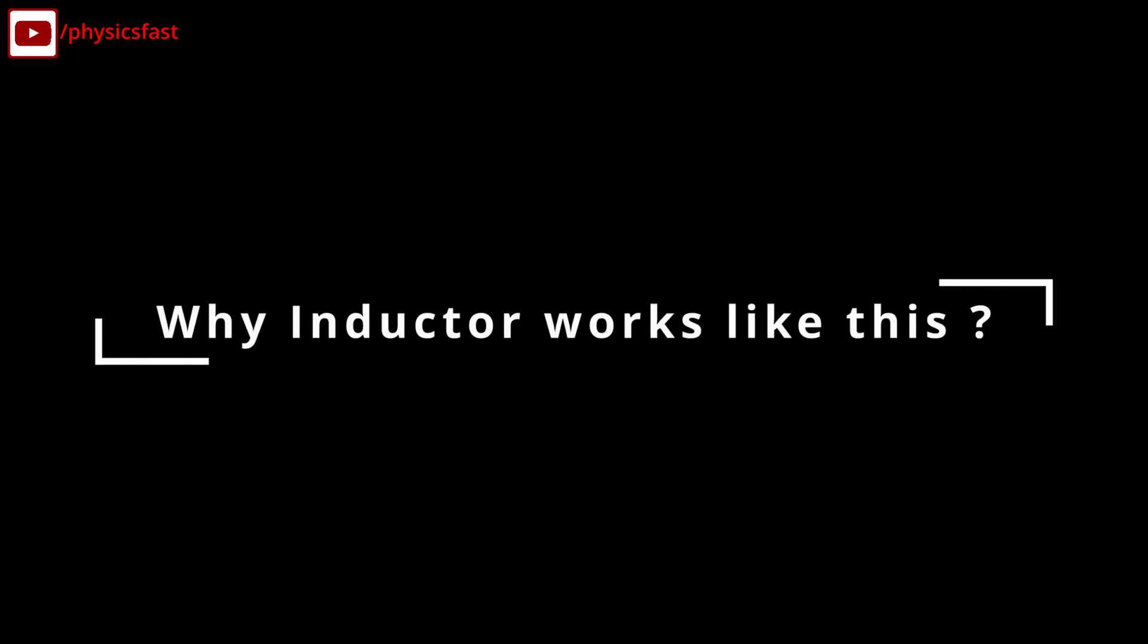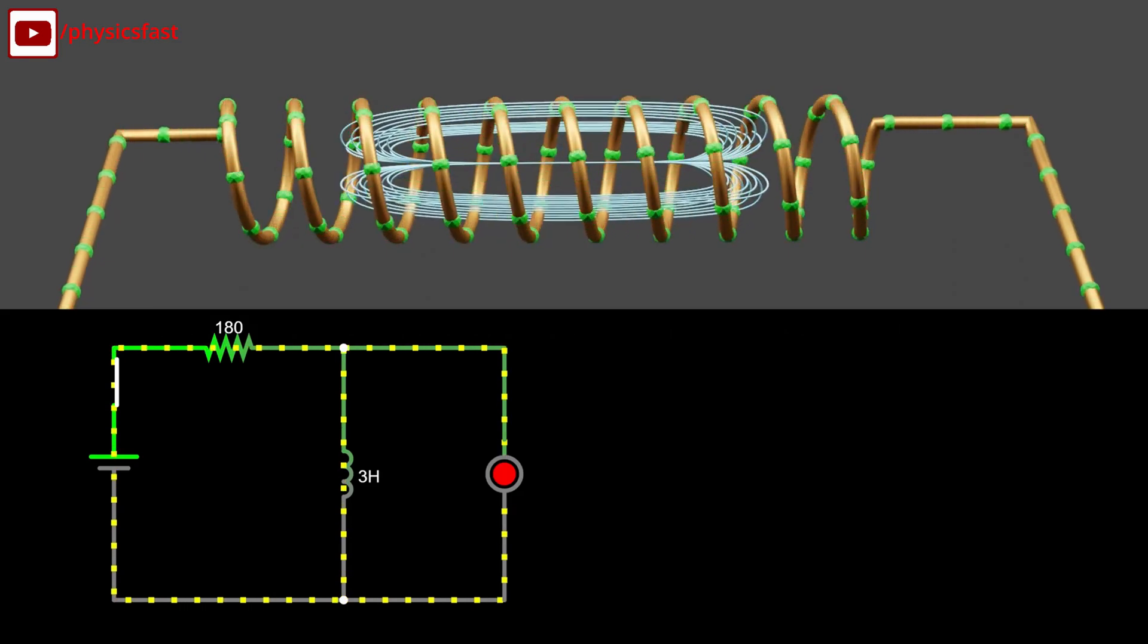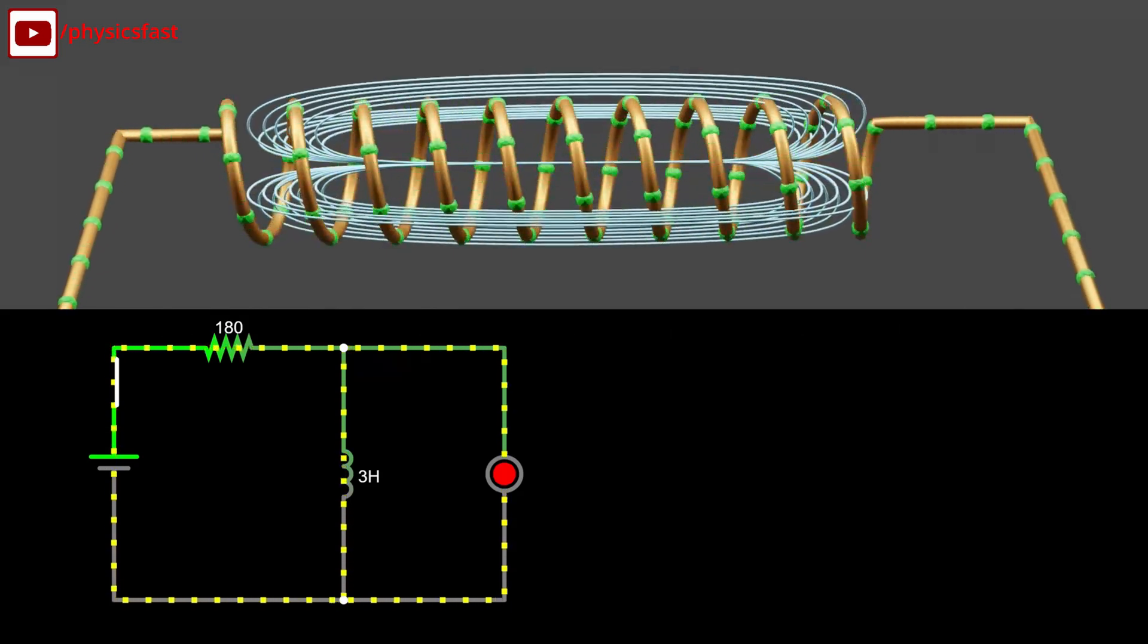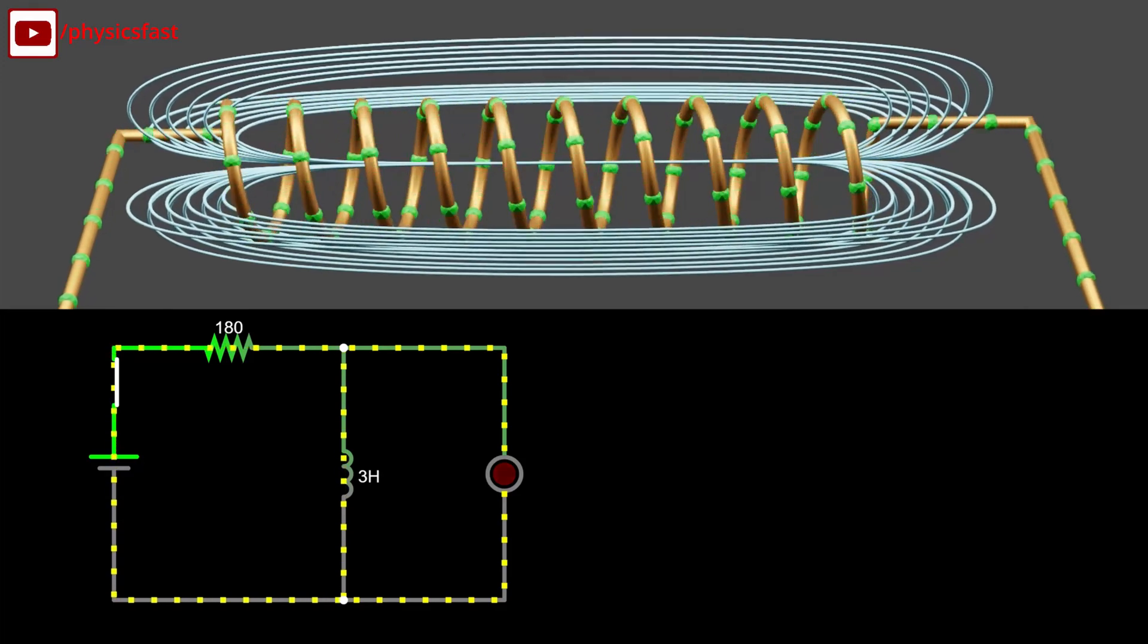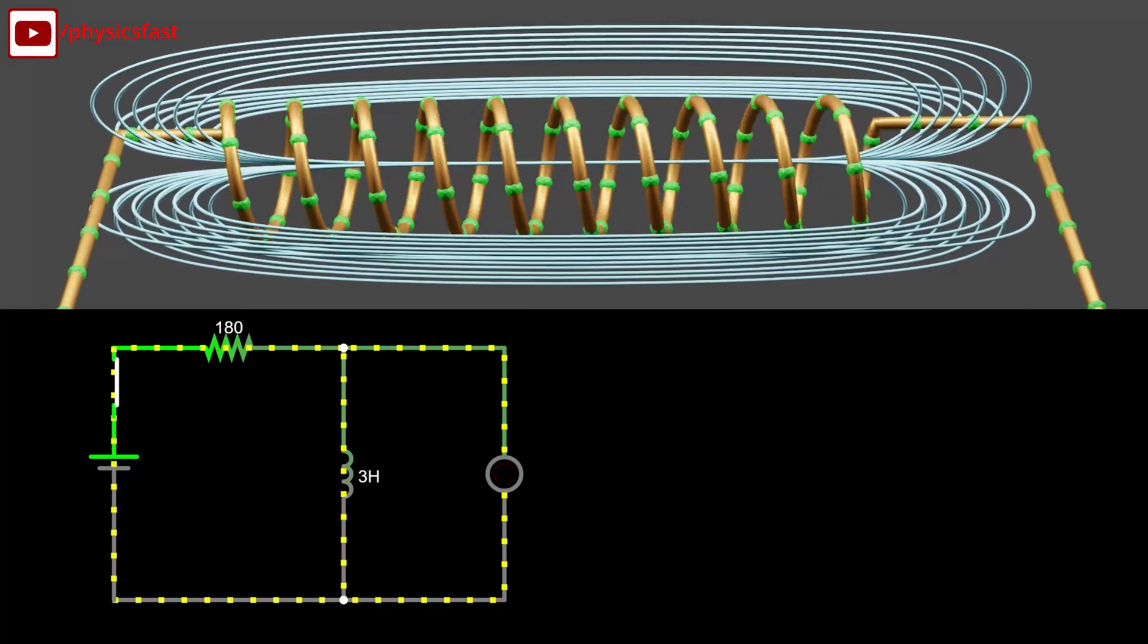Now the question is, why does the inductor behave like this? When the current flows through the inductor, a magnetic field begins to form around it, and gradually this magnetic field reaches its maximum limit.